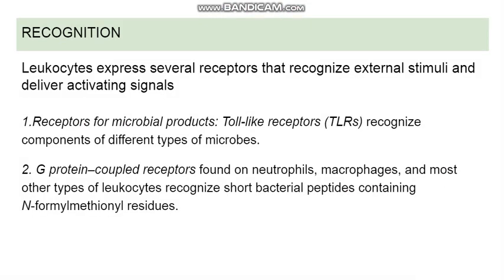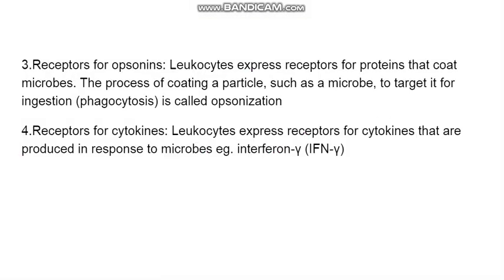The first step is recognition. WBCs have several receptors which will recognize these stimuli. Firstly, there is the toll-like receptor. Then there is the G-protein coupled receptor, which is also present on neutrophils and macrophages and recognizes short bacterial peptides. There are also receptors for cytokines like interferon gamma, which WBCs recognize so that action can be taken.